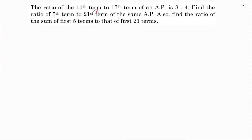The ratio of the 11th term to the 17th term of an AP is 3 is to 4. Find the ratio of the 5th term to the 21st term of the same AP. Also find the ratio of the sum of the first 5 terms to that of the first 21 terms.